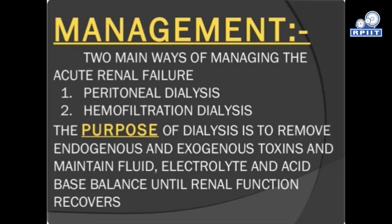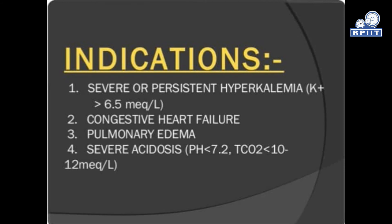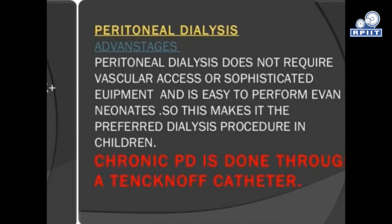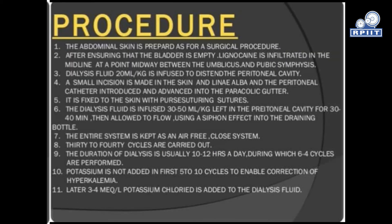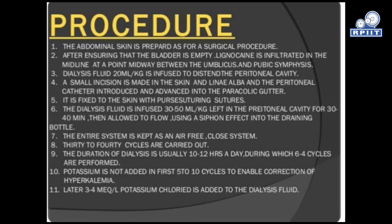Management: There are peritoneal dialysis and hemofiltration dialysis. The purpose of dialysis is to remove endogenous and exogenous toxins and maintain fluid, electrolytes, and acid-base balance until renal function recovers. Indications include severe fluid overload, hyperkalemia, congestive heart failure, pulmonary edema, and severe acidosis. Peritoneal dialysis advantages: It does not require vascular access or sophisticated equipment and is easy to perform, making it the preferred dialysis procedure in children. Chronic PD is done through a catheter procedure. The abdominal skin is prepared as for a surgical procedure after ensuring that the bladder is empty. Lignocaine is infiltrated in the midline at a point midway between the umbilicus and pubic symphysis.